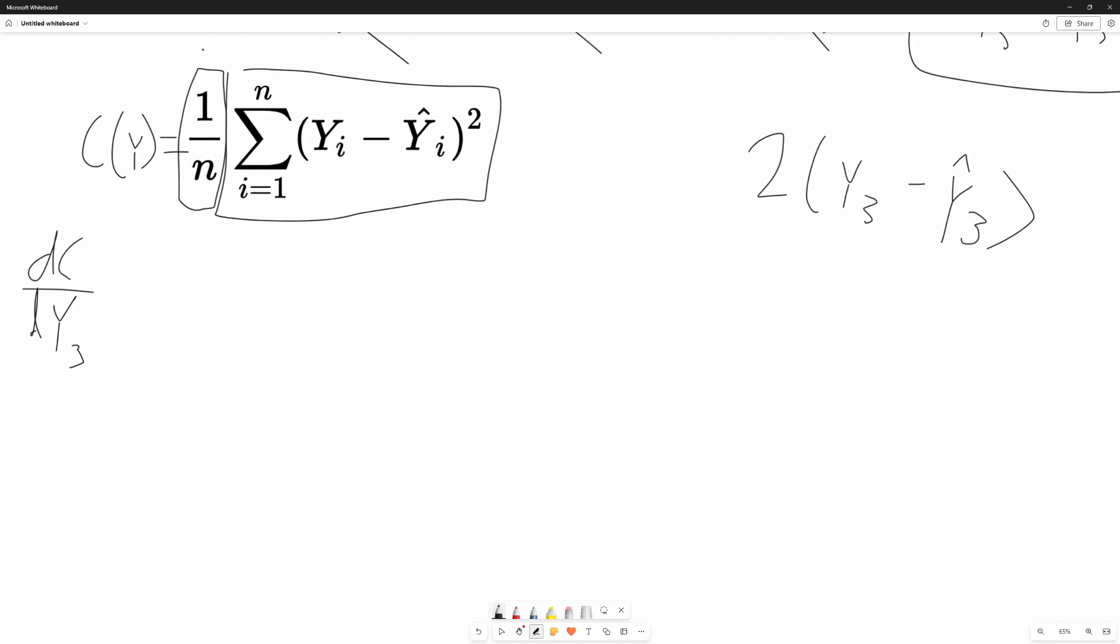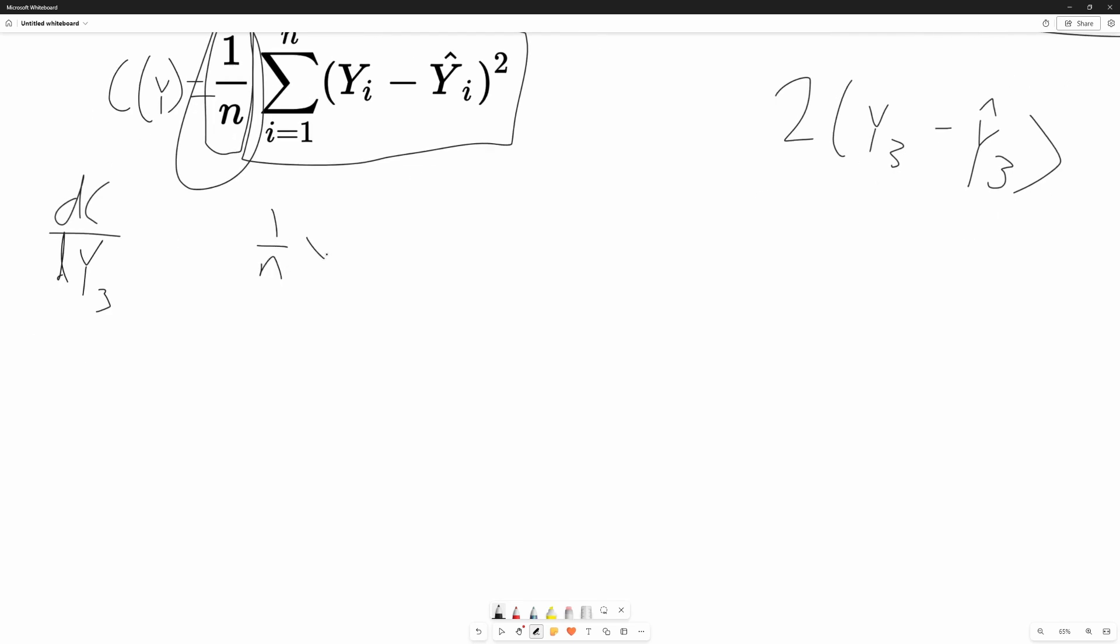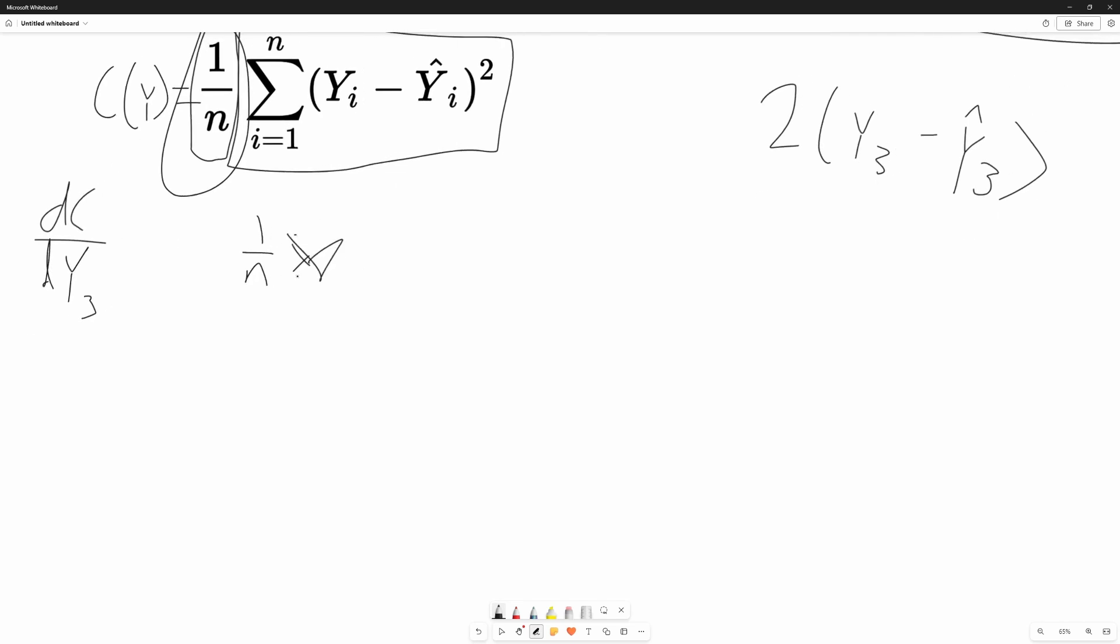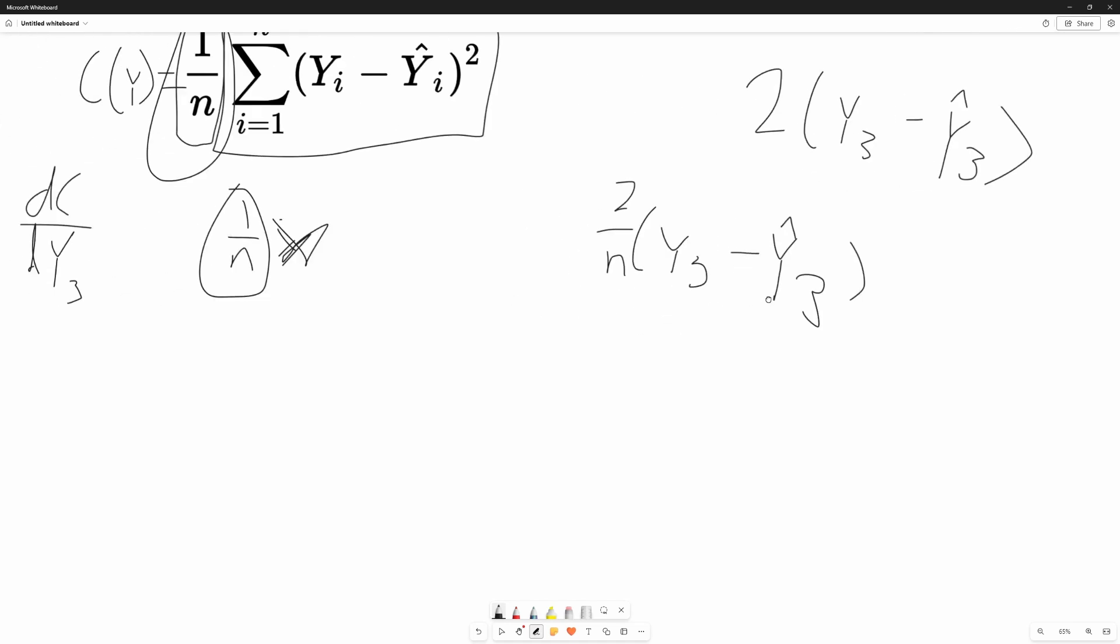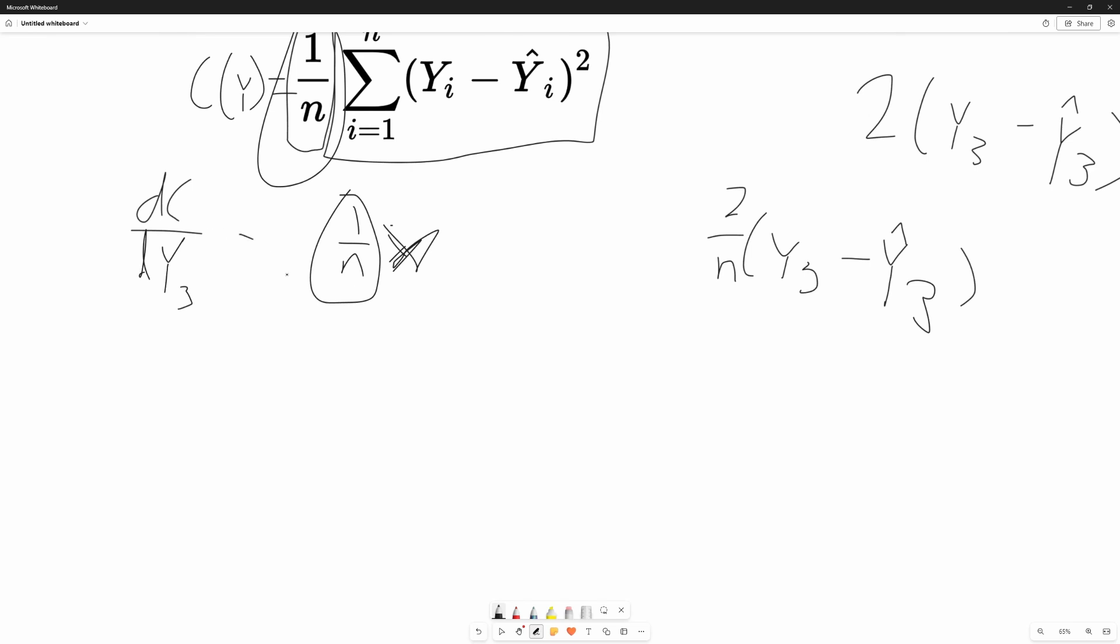Now, all we have to do now is apply the chain rule, since this is just like 1nx. It's just, boom, you have the derivative of 1n. Now applying the chain rule, we have 2, and my bad, y3 minus y hat 3. And boom, you have the derivative.